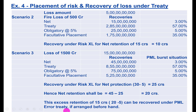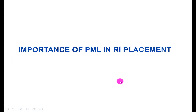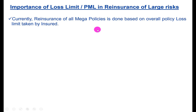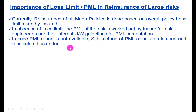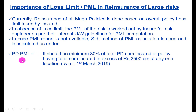Of the 20 crore balance, 5 crores is your retention, so the excess 15 crores can be recovered under a PML Error treaty if arranged beforehand. On the importance of PML in RI placement: currently reinsurance in all mega policies is done based on the overall policy loss limit taken by the insured. In absence of a loss limit, the PML of the risk is worked out by the insurer's risk engineers as per underwriting guidelines.